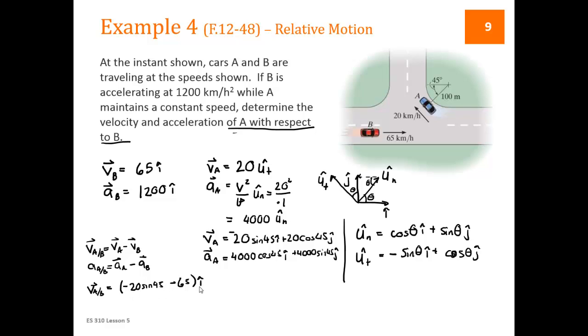Then the J hat parts, the VB doesn't have a J hat part. So all we have is plus 20 cosine 45 J hat. And then AAB is going to be the I hat parts that are 4000 cosine 45 minus 1200 I hats plus 4000 sine 45 J hat. These then are our answers. And you could plug them into your calculator and actually get numbers for them.